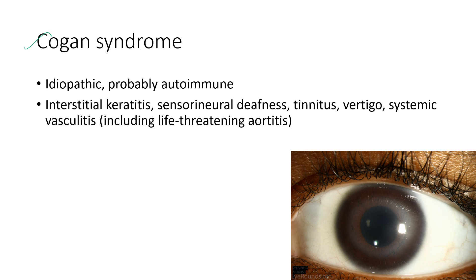Next is Cogan syndrome. It is idiopathic and probably autoimmune. The clinical features include interstitial keratitis, sensorineural deafness, tinnitus, vertigo, and systemic vasculitis including life-threatening aortitis. This picture shows interstitial keratitis in a case of Cogan syndrome.